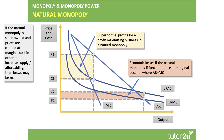This is a slightly modified version of a natural monopoly diagram developed because sometimes you get a question about nationalization. If this nationalized industry, instead of profit maximizing where MR meets MC, was required to price at marginal cost where AR meets long-run marginal cost, then in fact losses would be made. If pricing at P2, the price is less than the cost per unit, so there could be a risk of economic losses with a large natural monopoly.